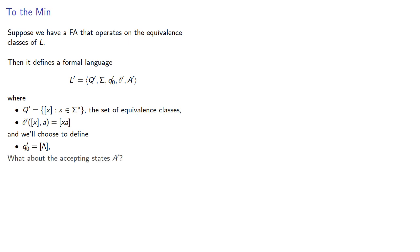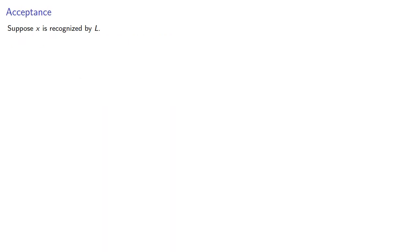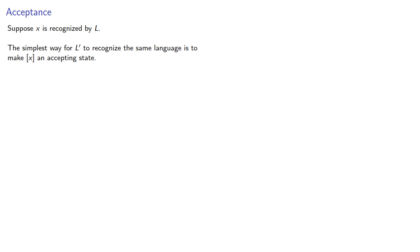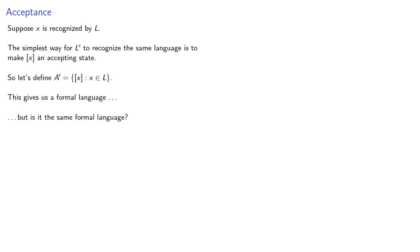What about the accepting states A'? Suppose x is recognized by our language. The simplest way for L' to recognize the same language is to make the equivalence class of x an accepting state. So let's define our accepting states as the set of equivalence classes of strings in our language. This gives us a formal language, but is it the same formal language?